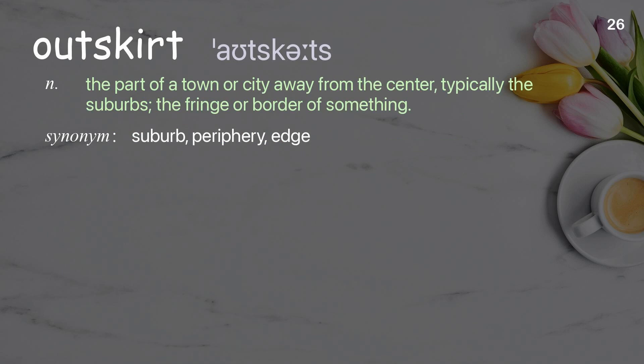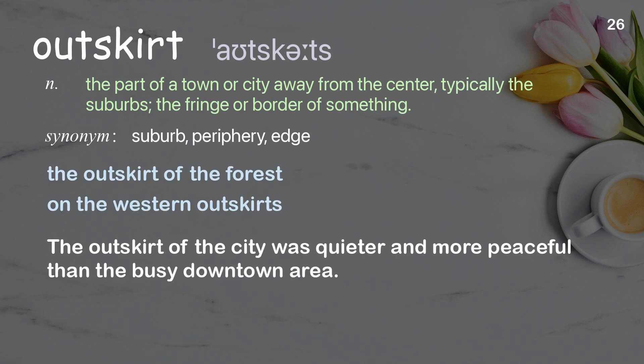Outskirt: the part of a town or city away from the center, typically the suburbs; the fringe or border of something. Examples: the outskirt of the forest. The outskirt of the city was quieter and more peaceful than the busy downtown area.